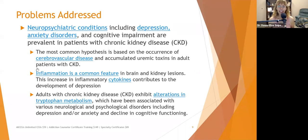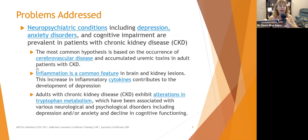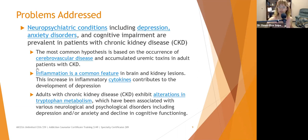Adults with chronic kidney disease exhibit alterations in tryptophan metabolism. Tryptophan is the amino acid that must be broken down to make serotonin, and serotonin is broken down to make melatonin. Since tryptophan metabolism is disrupted, patients may not have adequate serotonin — contributing to depression and anxiety — and may not have adequate melatonin, disrupting sleep and intensifying depression and anxiety. Alterations in tryptophan metabolism have been associated with depression, anxiety, and cognitive decline.